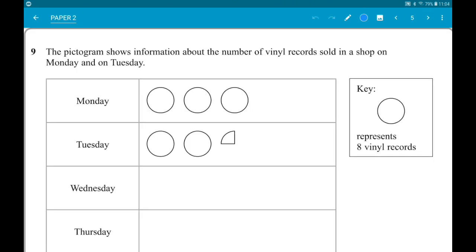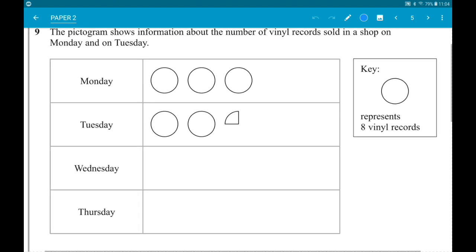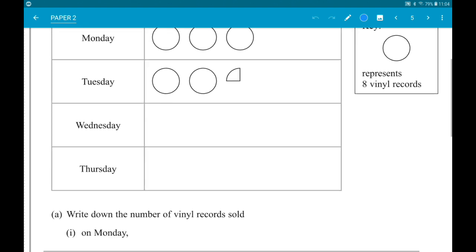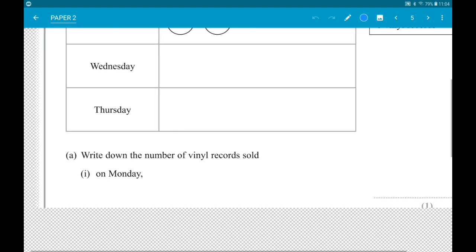Number 9: The pictogram shows information about the number of vinyl records sold in a shop on Monday and Tuesday. One circle represents eight vinyl records. Part A: write down the number of vinyl records sold on Monday. That's three times eight, so that's 24.